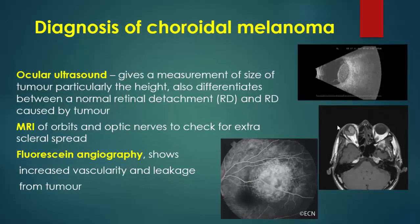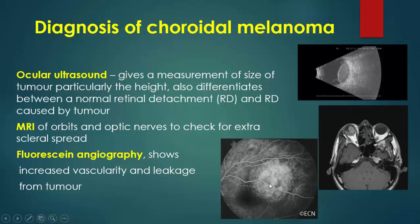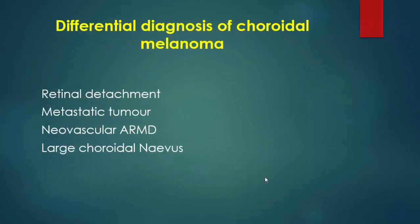Diagnosis of choroidal melanoma: ocular ultrasound can diagnose the mass with overlying retinal detachment. MRI of the orbit shows the tumor and checks for extraocular spread to the optic nerve. Fluorescein angiography shows increased vascularity and leakage from the tumor with sub-retinal fluid. Differential diagnosis includes retinal detachment, metastasis, neovascular age-related macular degeneration, and large choroidal nevus.